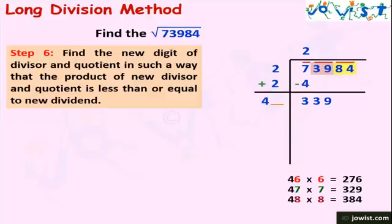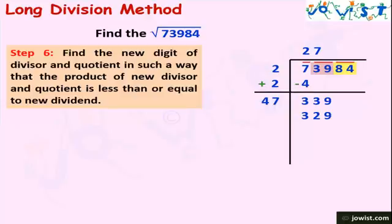Comparing results: 276 is too low, 384 is too high, and 329 is nearest to 339 and smaller. So we put 7 in the ones place and also in the quotient. Therefore 47 × 7 = 329. Subtracting 329 from 339 gives us a remainder of 10.